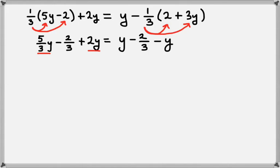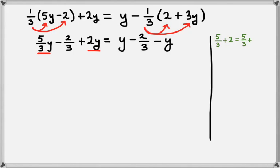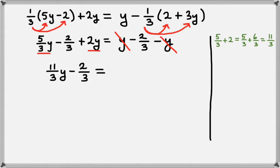The next thing we want to do is combine like terms on the left hand side. We have 5 thirds y plus 2y. Over here on the side, 5 thirds plus 2 is the same as 5 thirds plus 6 thirds, which is 11 thirds. So on the left hand side we have 11 thirds y and we still have the minus 2 thirds. On the right hand side the y and the negative y cancel, which leaves us with negative 2 thirds.